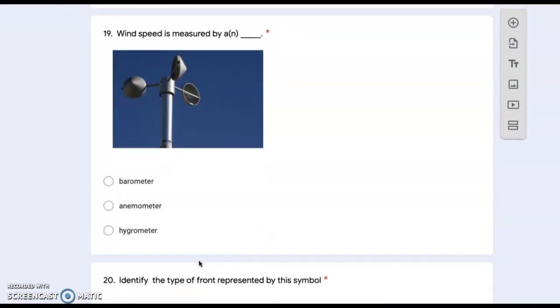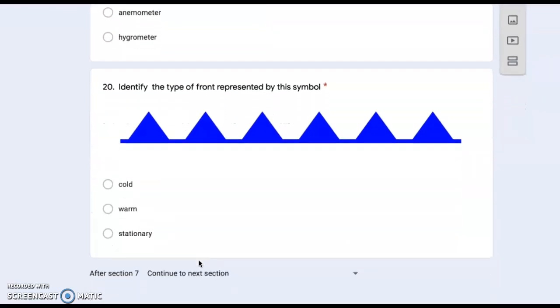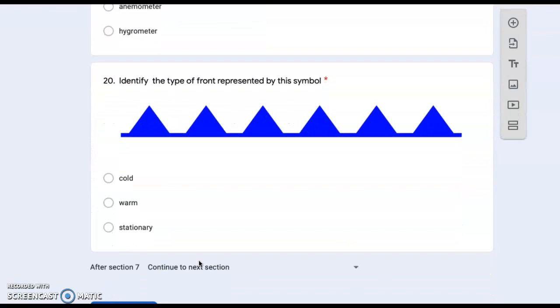Number nineteen: wind speed is measured by a barometer, anemometer, or hygrometer? Number twenty: identify the type of front represented by this symbol. Cold, warm, or stationary?